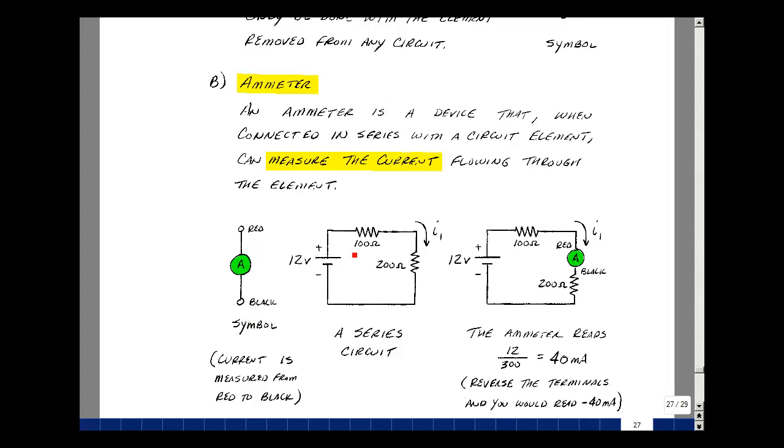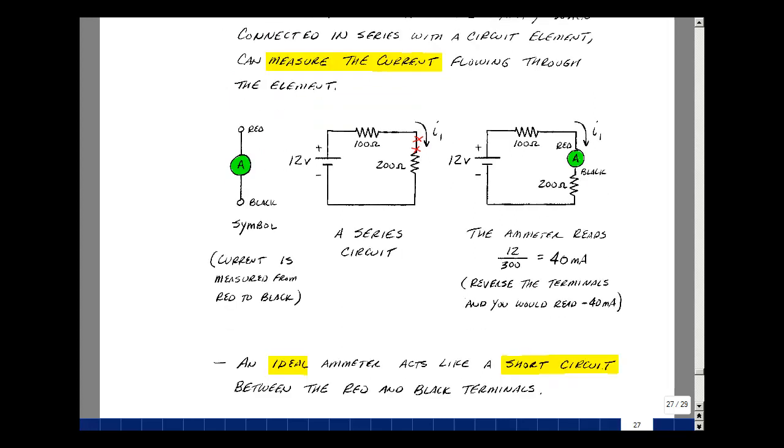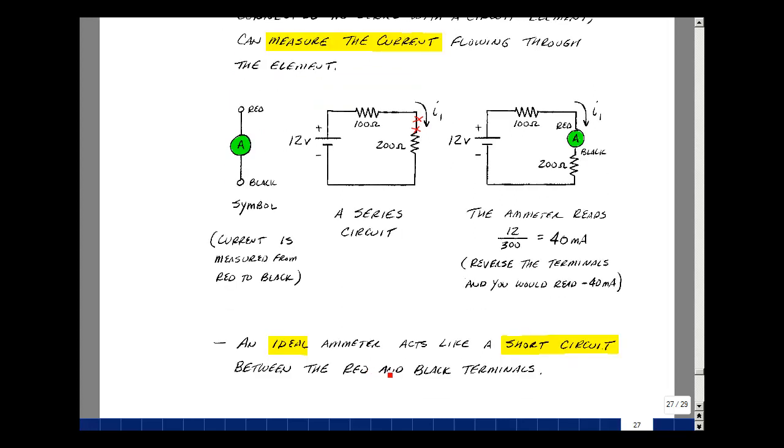Here's a circuit where I've got two elements in series. I'm gonna have to break the circuit element to stick the meter in. This is usually the hard part. What the meter is going to read is from the original circuit, 12 volts divided by 100 plus 200 or 300. That's 40 milliamps. If you were to reverse the terminals, you'd actually read minus 40 milliamps. An ideal ammeter acts like a short circuit between the black and red terminals.